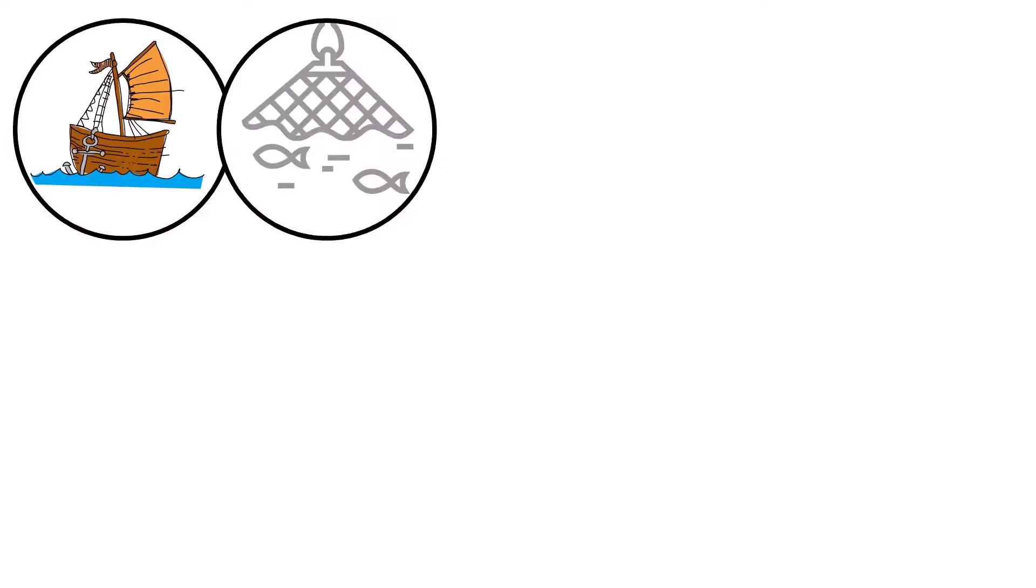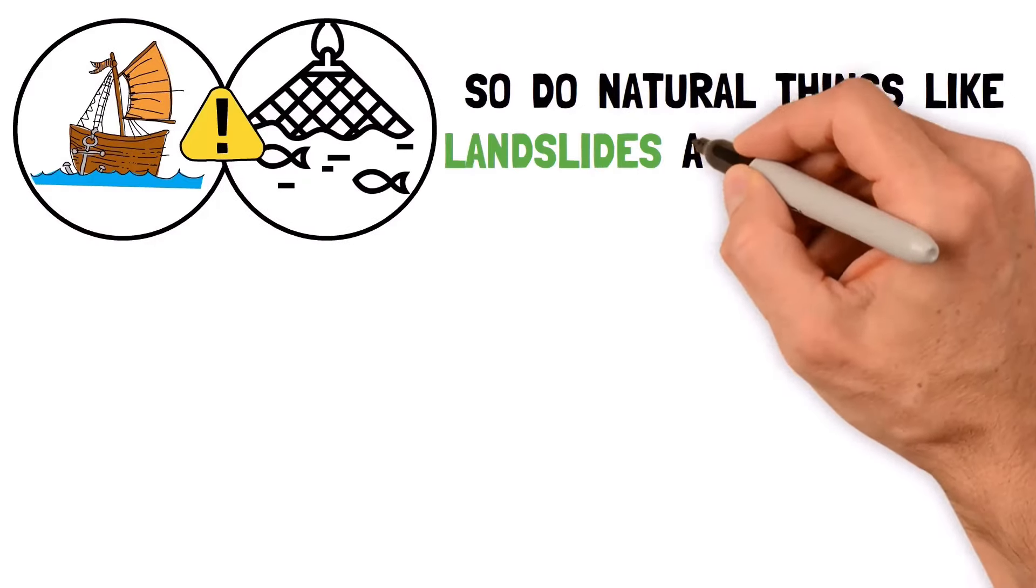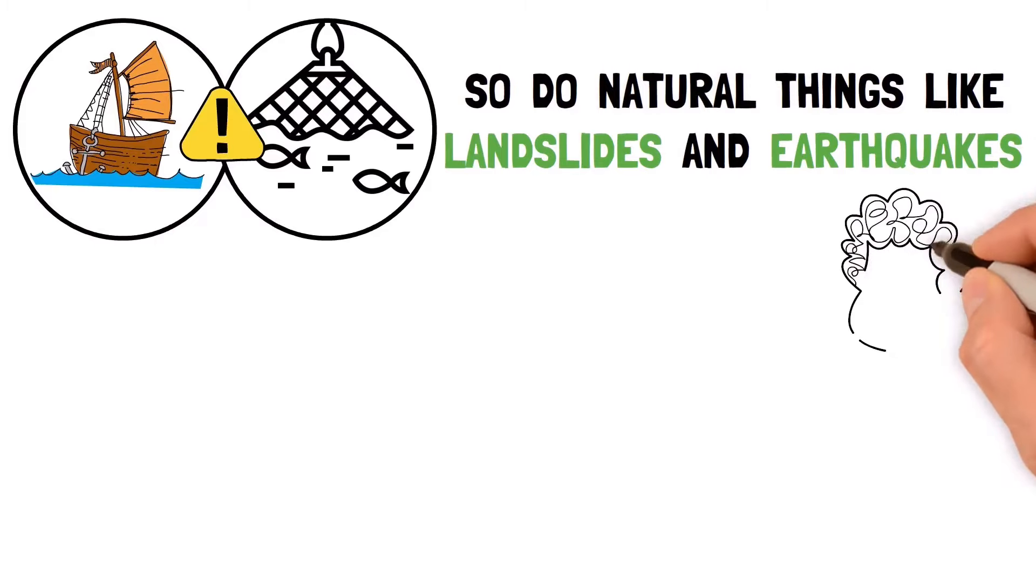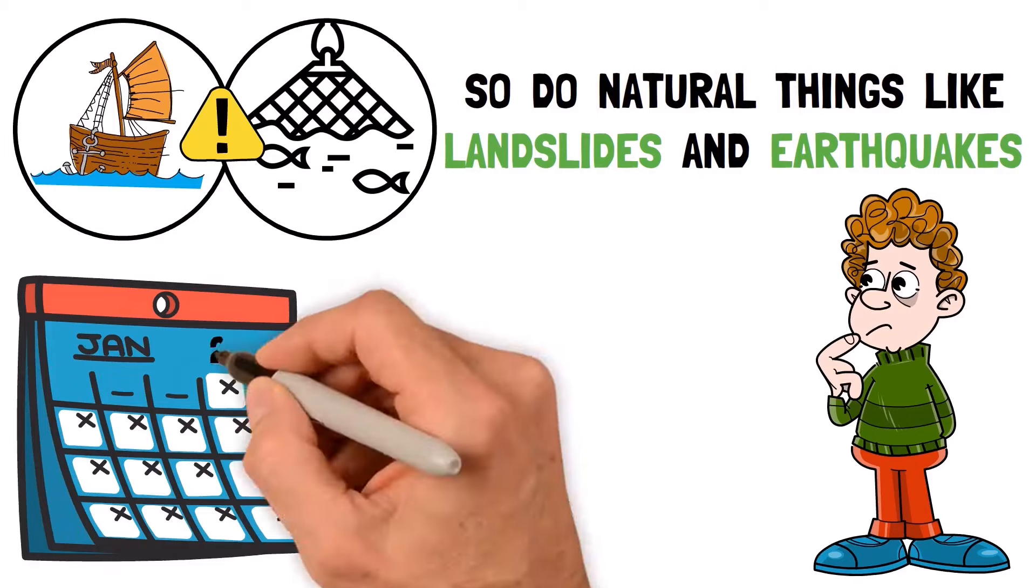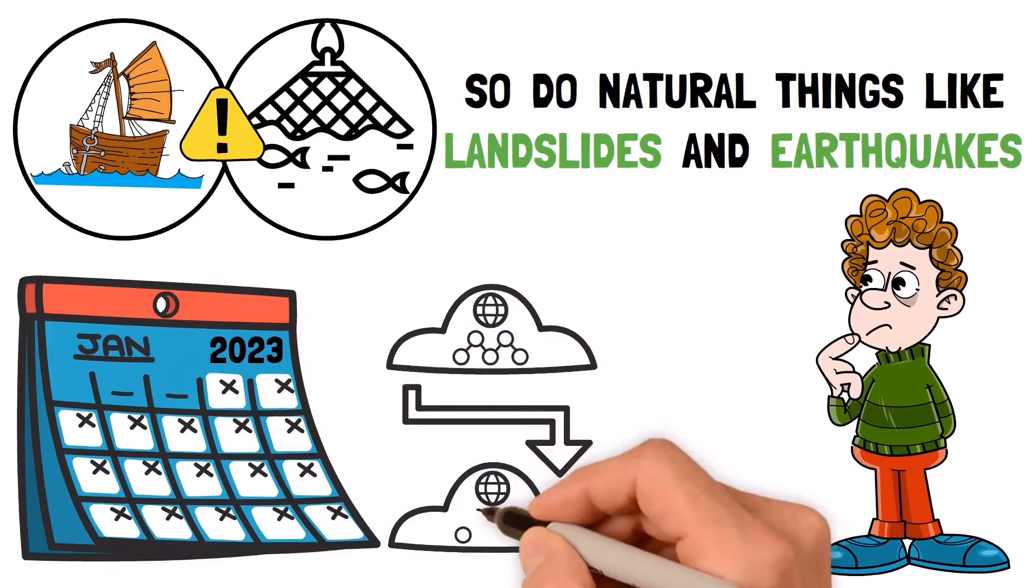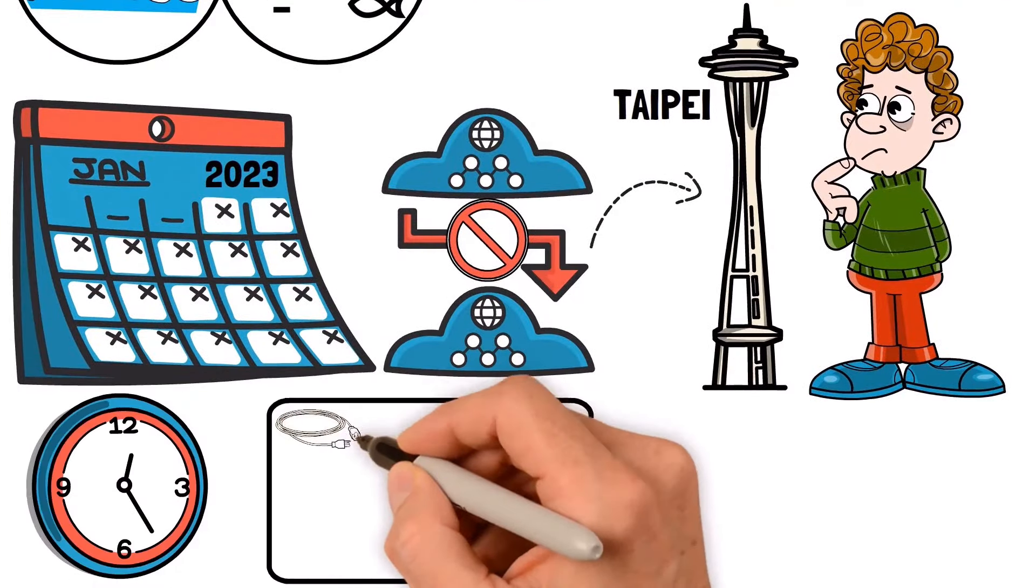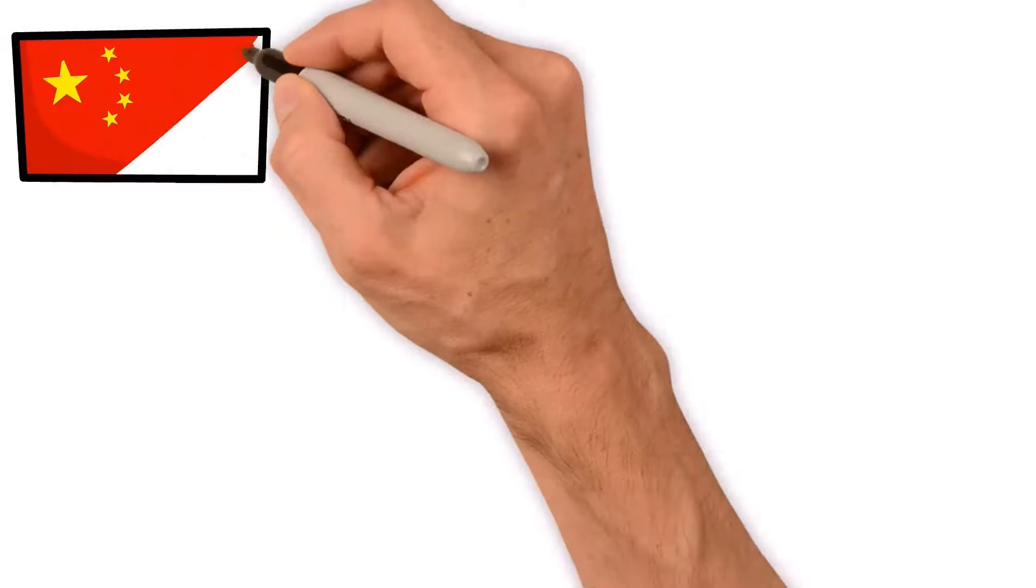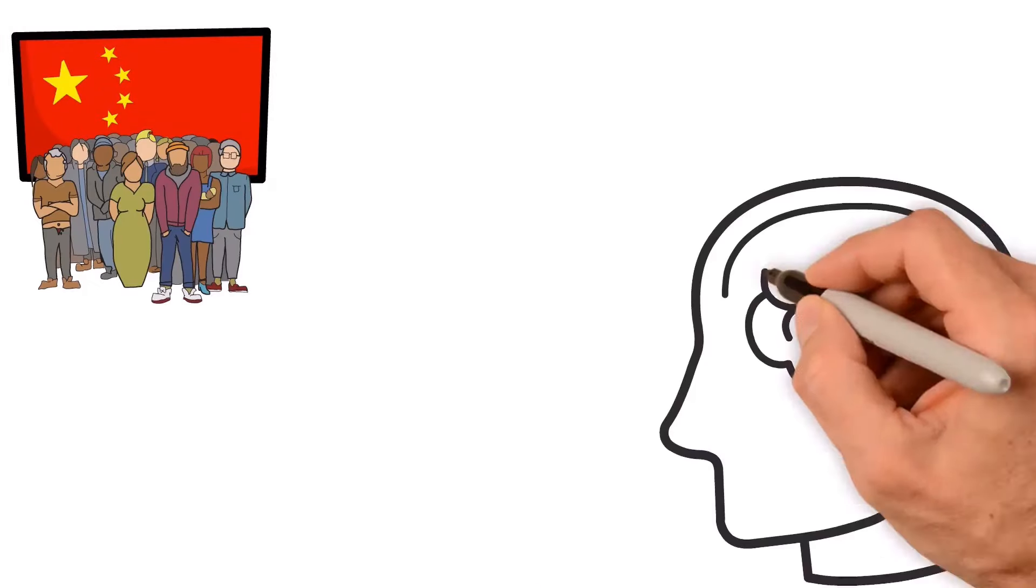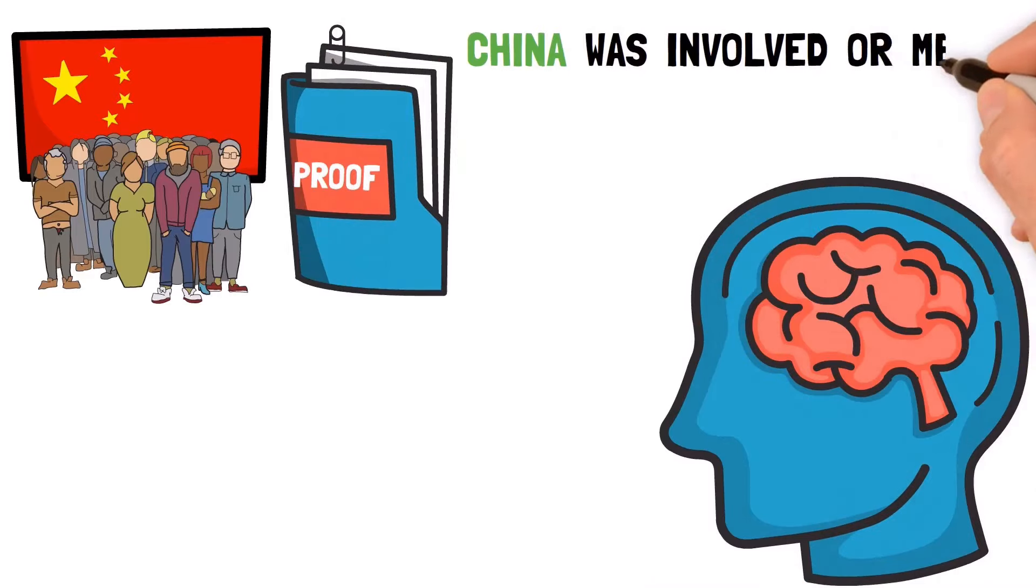Sometimes anchors and fishing nets cause problems, and so do natural things like landslides and earthquakes. All of this can lead to misunderstandings and mistakes. For example, in early 2023 the internet went down on some islands controlled by Taipei, and within a week the two main cables that connected the islands to Taiwan were cut. People thought China did it, but they later realized there wasn't any clear proof that China was involved or meant to do it.